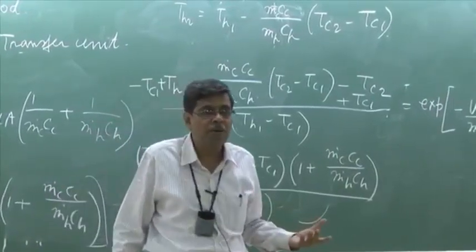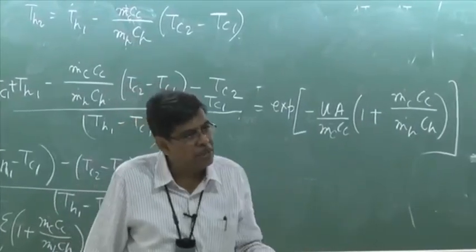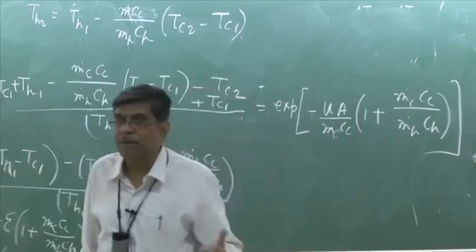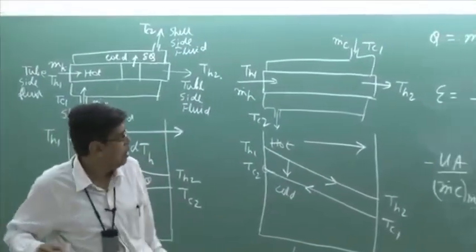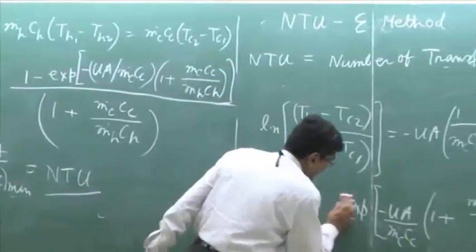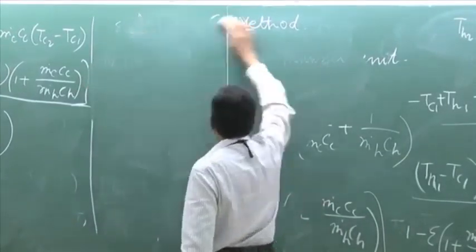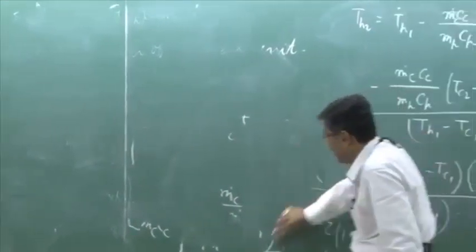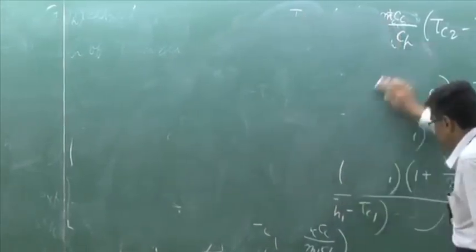Because the definition of epsilon is the change of temperature for the minimum fluid divided by the maximum change of temperature available in the heat exchanger. Now, if you write in a very generic shortcut compact form, a generic expression is like this, by defining a parameter.